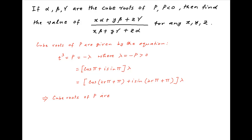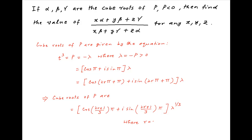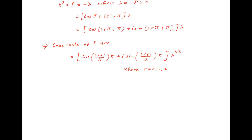Therefore the cube roots of P are given by cos((2r+1)/3 · π) + i sin((2r+1)/3 · π) times λ^(1/3), where r takes on the values 0, 1, and 2.